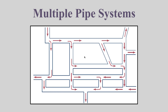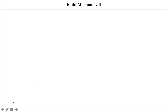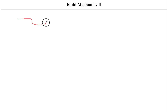In this video we are going to briefly talk about multiple pipe systems. It's important to discuss this because in a lot of piping systems usually we have more than one pipe involved. If we have only a single pipe flow, whether that is straight or whether it has bends in it, that would be classified as a single pipe system, but a lot of times we have multiple piping systems.